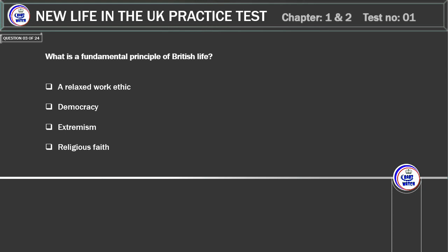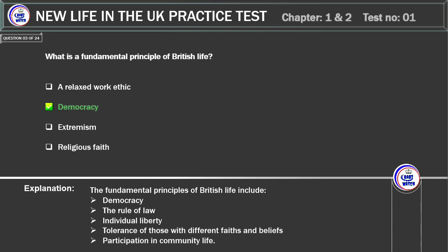What is a fundamental principle of British life? A relaxed work ethic. Democracy. Extremism. Religious faith. Correct answer: Democracy. Explanation: the fundamental principles of British life include democracy, the rule of law, individual liberty, tolerance of those with different faiths and beliefs, and participation in community life.